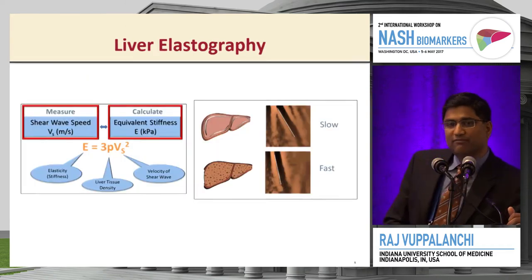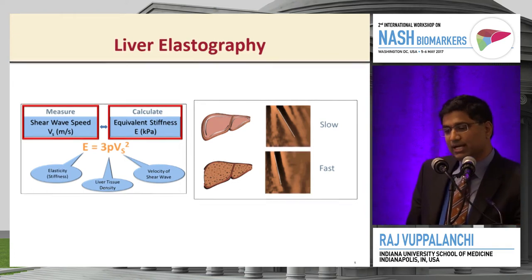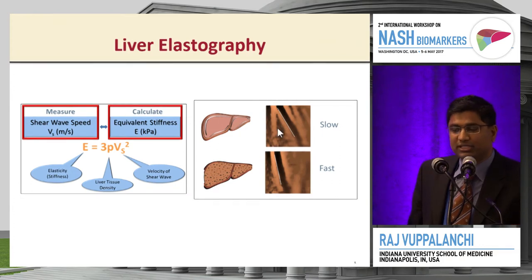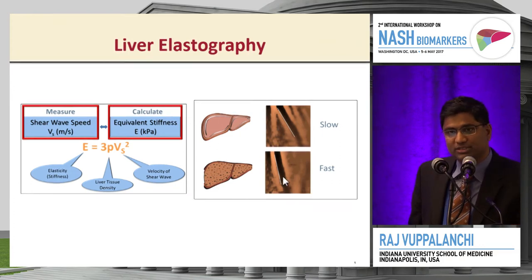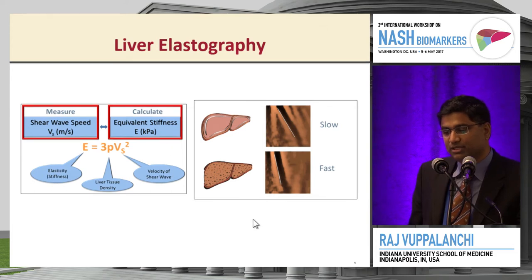Liver elastography is an imaging technique where you measure liver stiffness, and it's based on Young's modulus when a shear wave passes through the liver. In a normal liver the shear wave is slow, while in a liver with significant fibrosis that is stiff, the shear wave is fast. You measure the speed and convert it to elastance based on this equation.